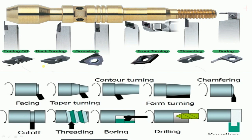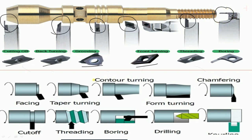The tools used here include cutting tool, back turning tool, grooving tool, and front turning tool. Also shown are grooving, back turning, cutting off, threading, and boring tools. Some lathe operations include facing, taper turning, counter turning, form turning, chamfering, cut-off, threading, boring, and drilling.